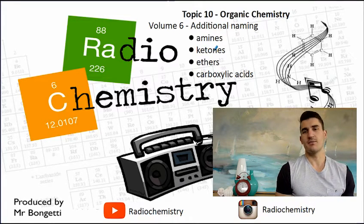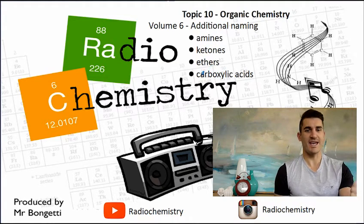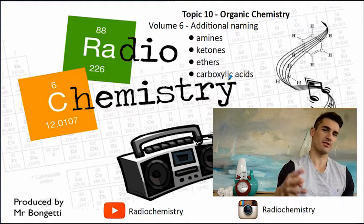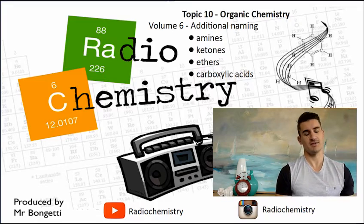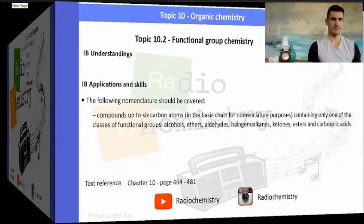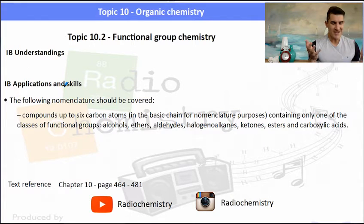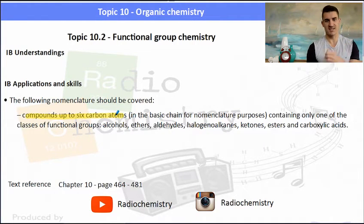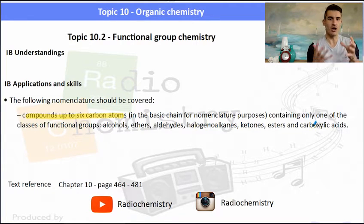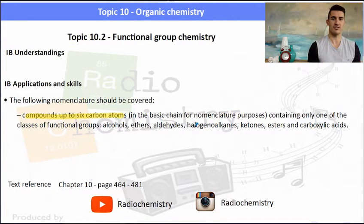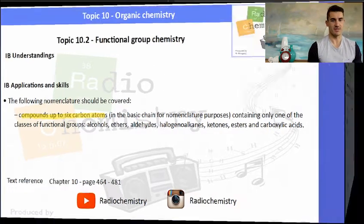Volume 6 we look at additional naming. We look at naming amines, ketones, ethers, carboxylic acids. The IB applications are we need to be able to name these different functional groups with up to 6 carbons in the chain including only one of the functional groups. So they probably won't mix the functional groups up on you, but I probably will in the video just to get a bit of understanding.